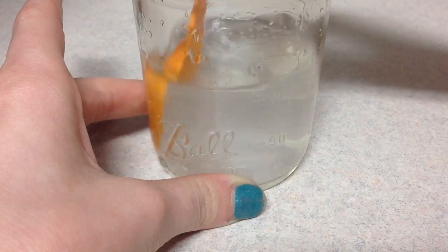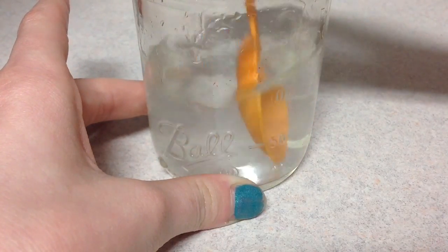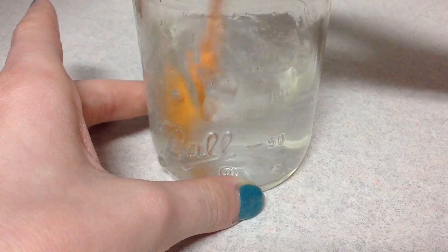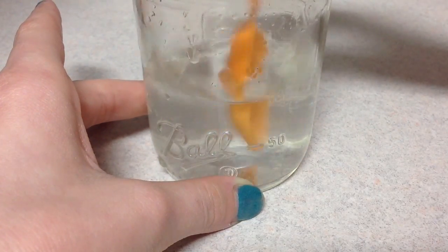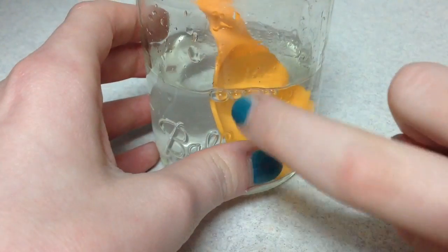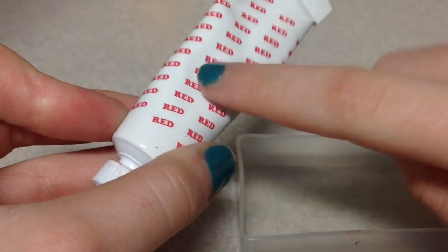So basically, the Borax water solution creates a chemical reaction with the glue, which makes it stiffen up and become slime. So yes, just keep doing that until it's dissolved.